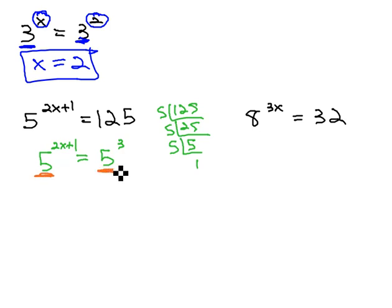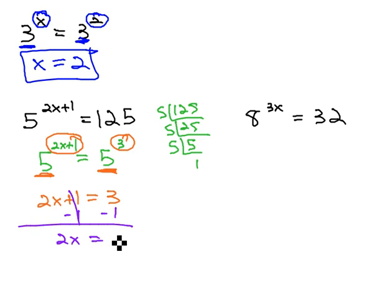Because the bases are the same, we are allowed to claim that the exponents must also be the same. 2x plus 1 must equal 3. This gives us a simple two-step equation we can quickly solve by subtracting 1 to get 2x equals 2, and dividing by 2 to find that x is equal to 1. We found our solution for x by finding the prime factorization of both numbers. 5 was already prime. 125 factored to 5 cubed, and that gave us the same base on both sides. If they have the same base, the exponents must also be equal.